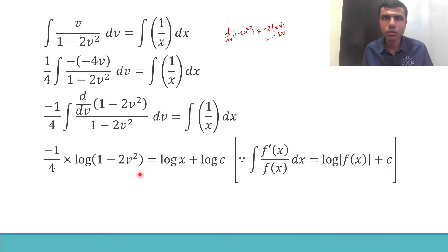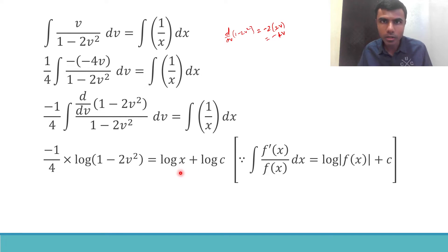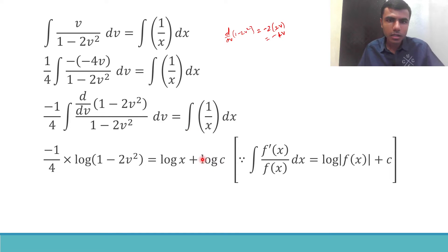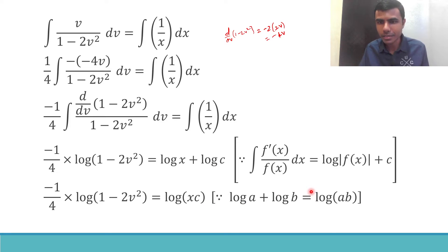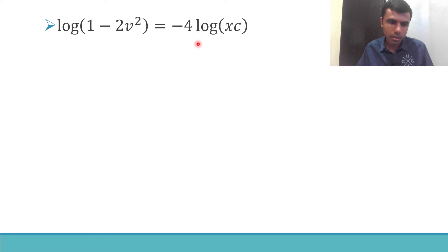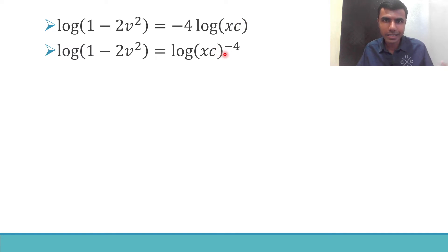Since this is the case, this integral's answer is log of the denominator — log(1 minus 2v²). I'm not using the modulus sign because the textbook also doesn't use it here. And integration of 1/x is log x. The constant of integration I'm taking as log C. So log x plus log C is nothing but log(xC), since log a + log b = log(ab).